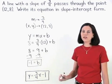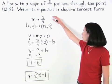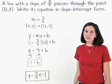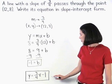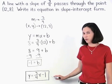So the equation of a line with a slope of 3 fourths and passes through the point 12, 8, is y equals 3 fourths x minus 1.